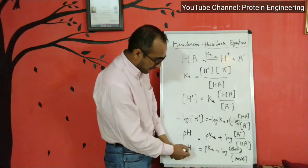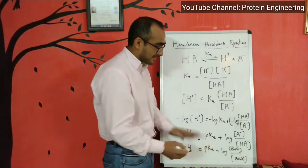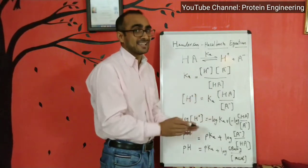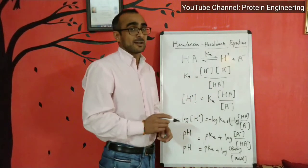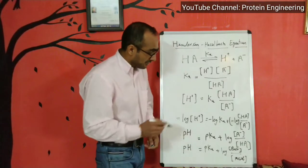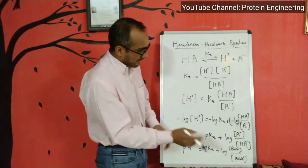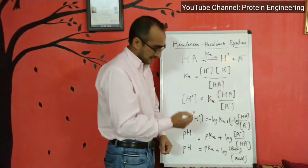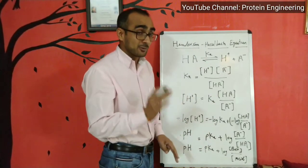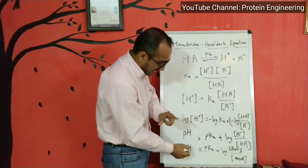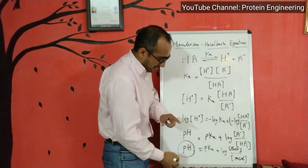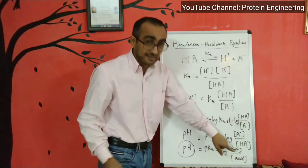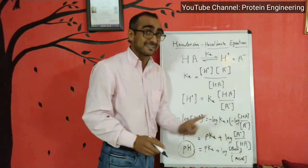This is the final equation: pH equals pKa plus log of the concentration of the base divided by the acid. This is the Henderson-Hasselbalch equation. You use it to find out the concentration of base and acid to make a buffer — to make a solution of a specific pH. The pH depends on the relative concentration of base and acid in a solution.